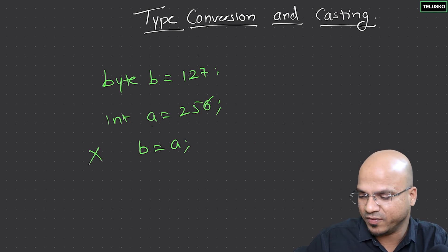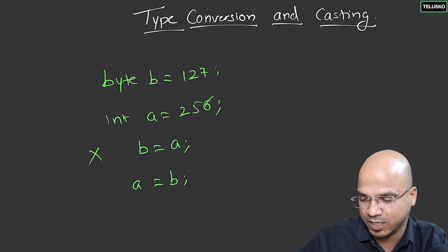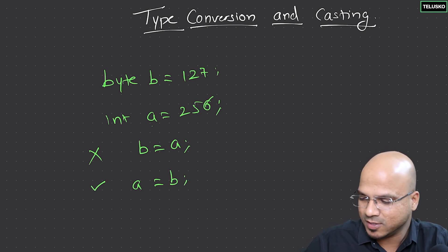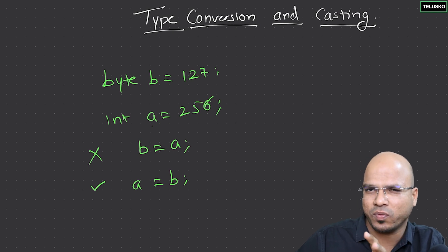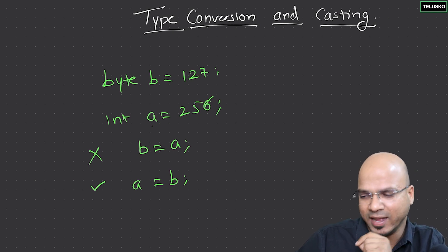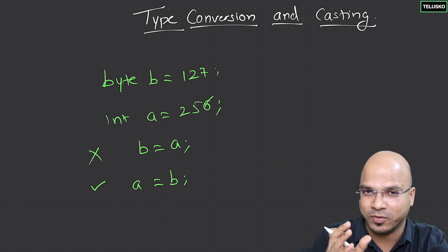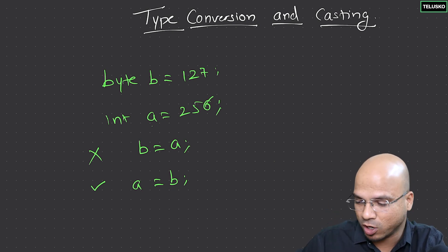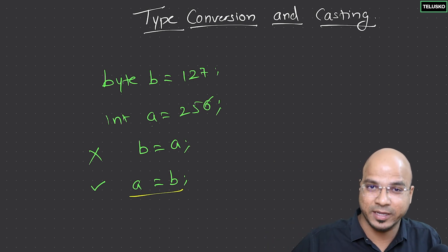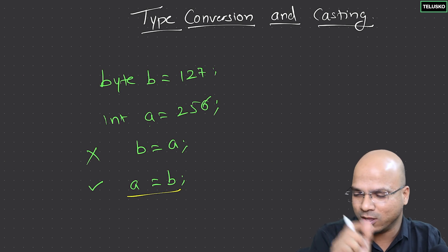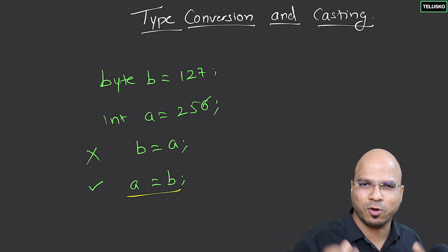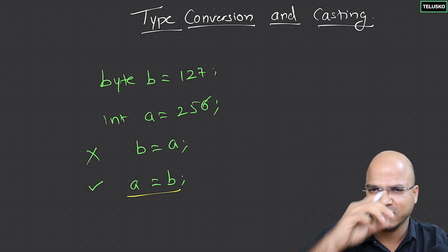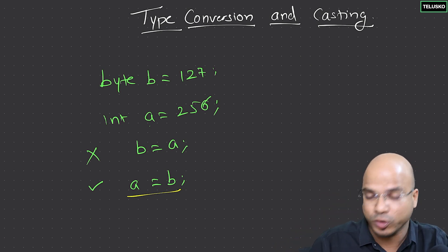However, the reverse will work — assigning b into a. The type of a is integer, which has a bigger range, and byte has a smaller range. Your compiler says you're trying to assign an integer value to byte and you might lose data — that's narrowing. On the other hand, assigning byte to integer is widening. You can put a small item in a bigger box, but not a bigger item in a small box.